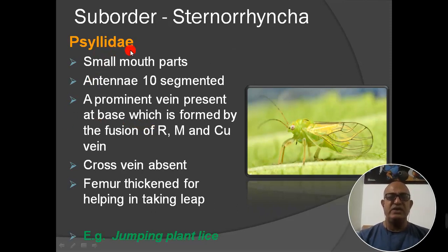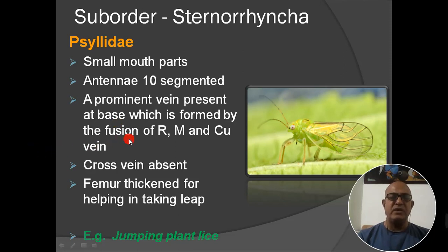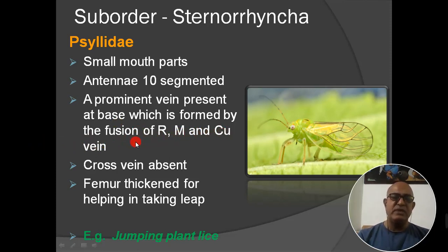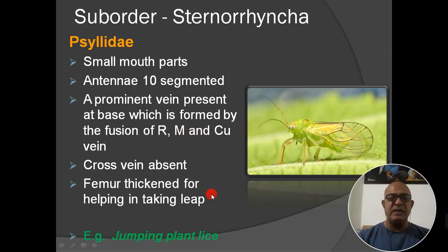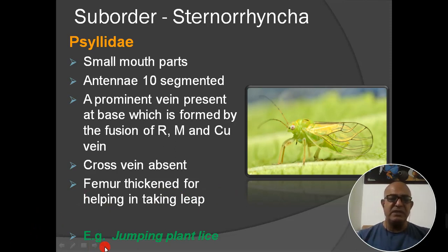First family: Psyllidae. Mouthparts are small. Antennae are 10-segmented. A prominent vein is present at the base of wings, formed by the fusion of radius, media, and cubitus veins. Cross veins are absent. Femur is thick and strong, helping the insect in jumping. The main example is jumping plant lice — they are plant lice that can jump.